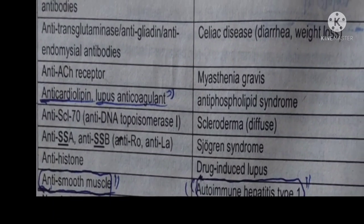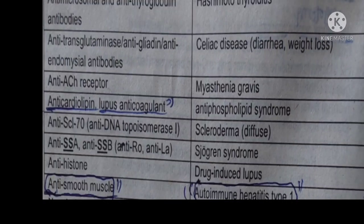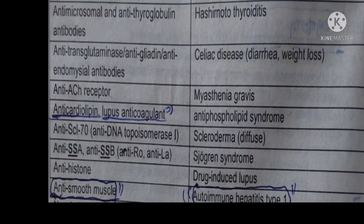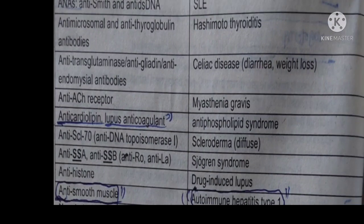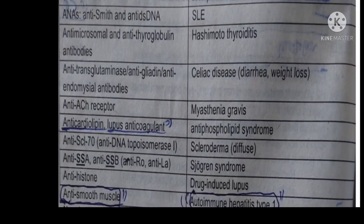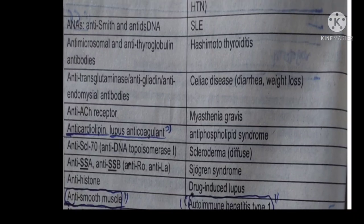Anti-cardiolipin antibodies and lupus anticoagulant are diagnostic for antiphospholipid syndrome. Anti-Scl-70, also called anti-DNA topoisomerase 1 antibody, is specific for diffuse-type scleroderma.